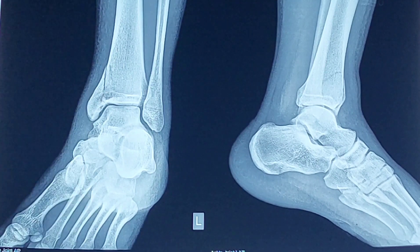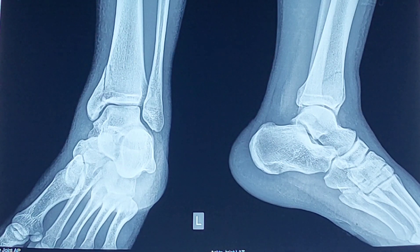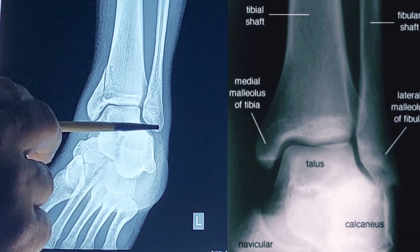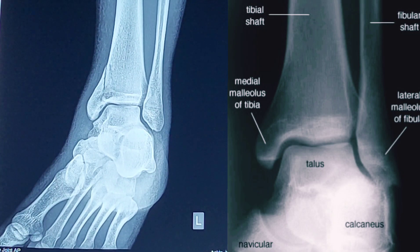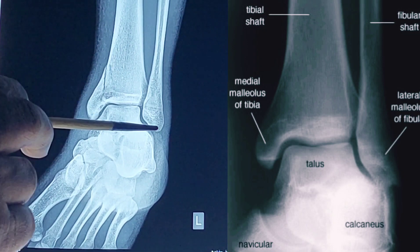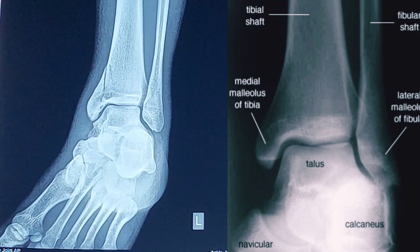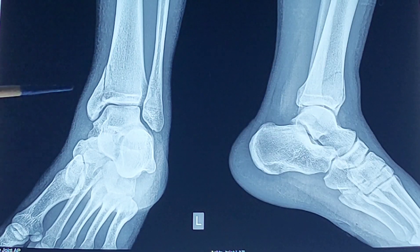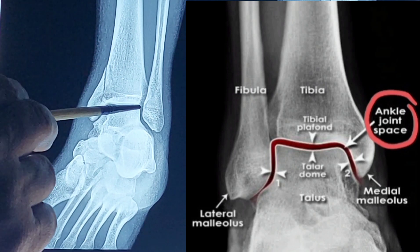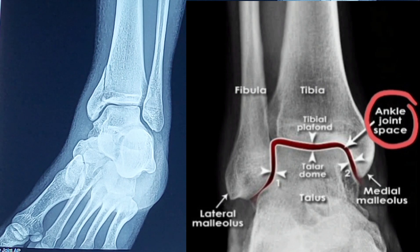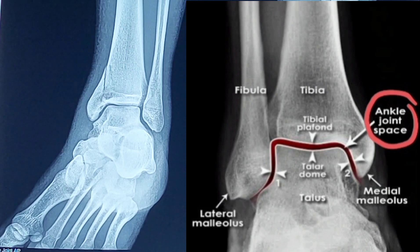Are the two malleoli at the same level? Obviously not. You can see the tip of the lateral malleolus is at a lower level than the tip of the medial malleolus — about 2 cm below. Here we can also see a radiolucent or black area. What is this? This is the joint space. We know any joint space appears black on X-ray.